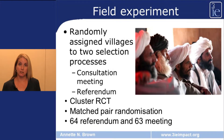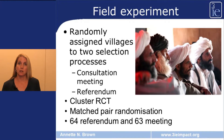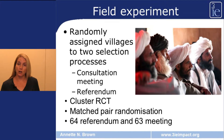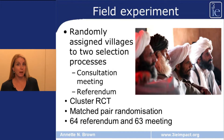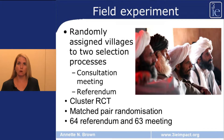The authors of this study conducted a field experiment. They randomly assigned villages to two different selection processes. In the control case, selection was done via the typical and traditional consultation meeting. In the treatment villages, the authors implemented a referendum. This is a cluster randomized control trial because the intervention is randomized at the village level but many outcomes are measured at the individual level. The authors used matched pair randomization, randomizing between pairs of similar villages, ending up with 64 referendum villages and 64 meeting villages.